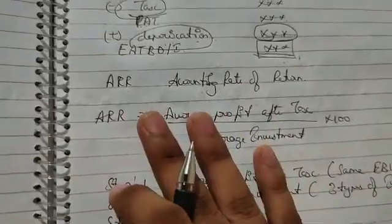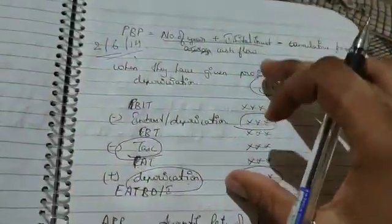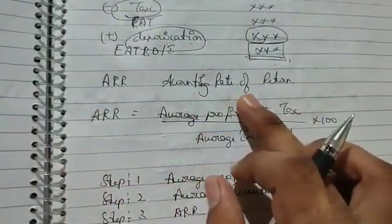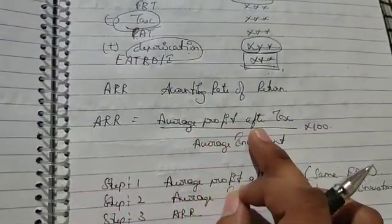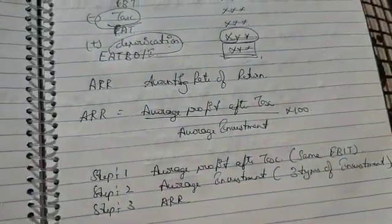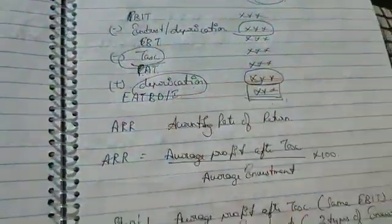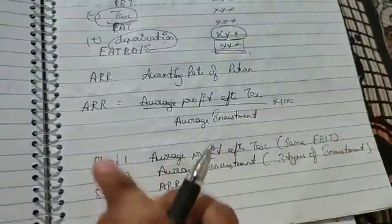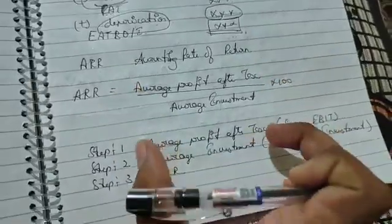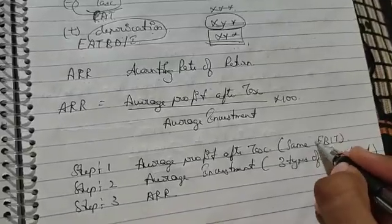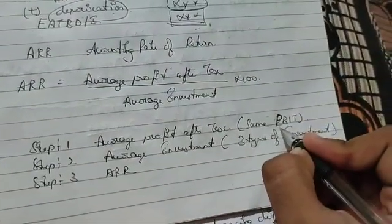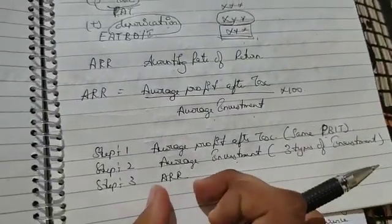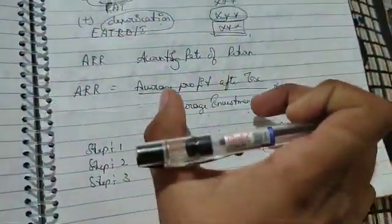Now we go to ARR, accounting rate of return. The formula is: ARR equals average profit after tax divided by average investment, multiplied by 100. Unlike payback period, depreciation is NOT added back here — we only take the amount after tax. For average investment, there are three types which we will learn. First calculate average profit, second calculate average investment, and third calculate the full formula.